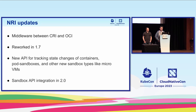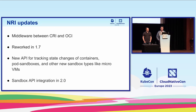NRI — Node Resource Interface — is a new way to intercept OCI spec from CRI, and it's a new addition significantly reworked in 1.7. We switched from a CNI-style plugin model, where we call a plugin binary and pass information via stdin, to a more complex gRPC-based model. NRI plugins can now amend parts of the OCI spec and handle events at every step of pod and container lifecycle. There's an experimental integration with Sandbox API in CRI, which we plan to complete in 2.0, so NRI plugins will be capable of handling sandbox events as well. We also want to expand what can be changed from a plugin, and another possibility being explored is getting NRI working on non-Linux platforms.